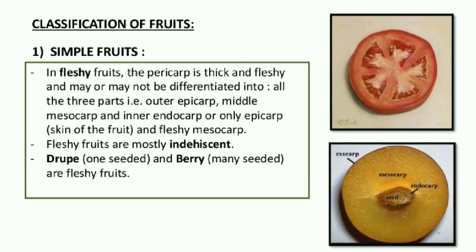Coming to fleshy fruits, the pericarp is thick, fleshy, juicy, watery and may or may not be differentiated into all three parts — epicarp, mesocarp and endocarp. In some fruits it is differentiated into all three layers, but in some it is not. Fleshy fruits are mostly indehiscent, meaning after maturity they will not break open. Drupe, for example mango; berry, for example tomato, are the fleshy fruits.